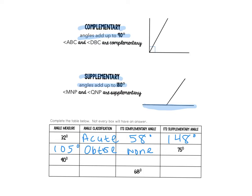The next one says the angle measure is 90 degrees, so the classification would be a right angle. We would not have a complement because it's already 90 degrees, but we would have a supplement: 180 minus 90, which gives us 90.